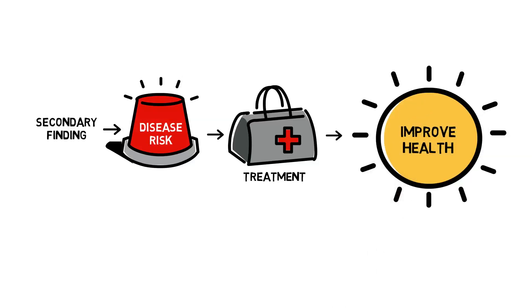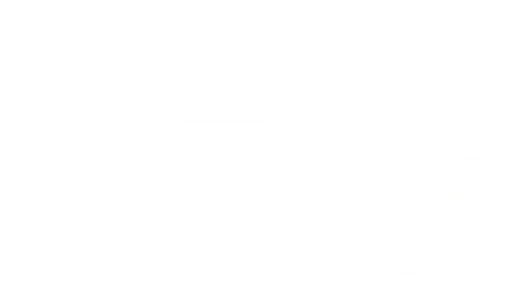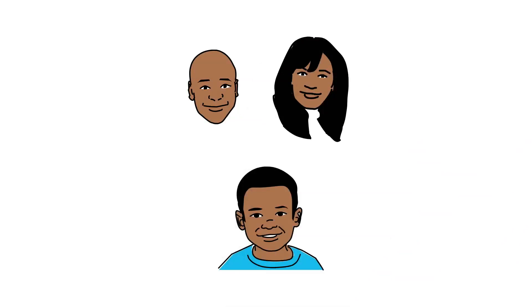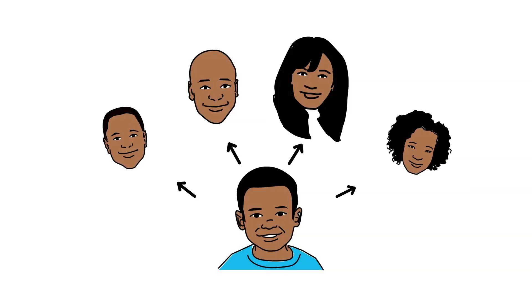Gene changes that cause secondary findings can be inherited. This information could be helpful for Jimmy, his parents, and other family members who may be at risk and could benefit from this knowledge.